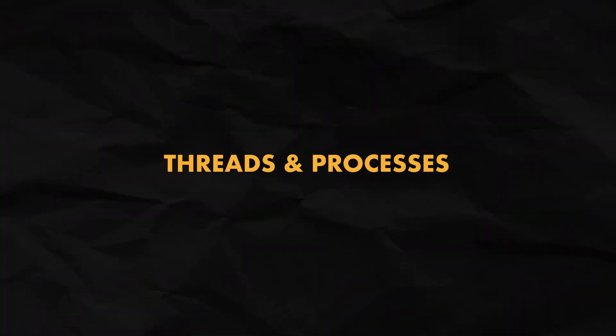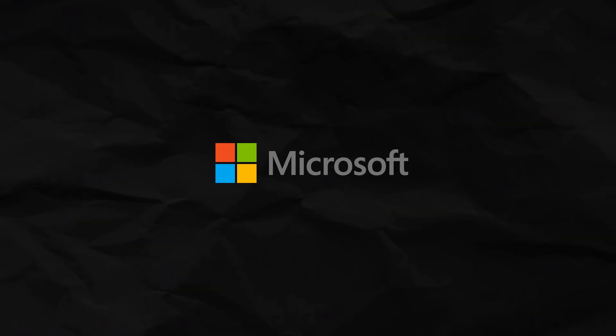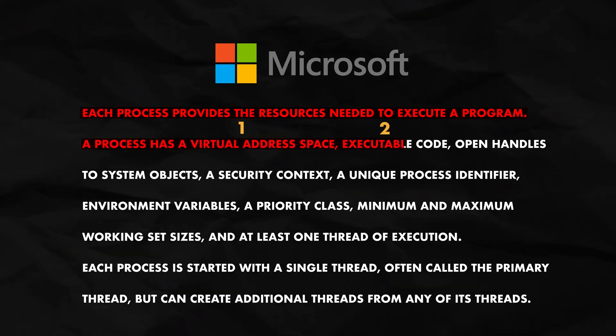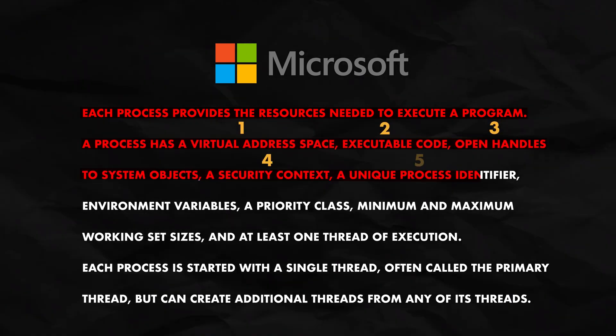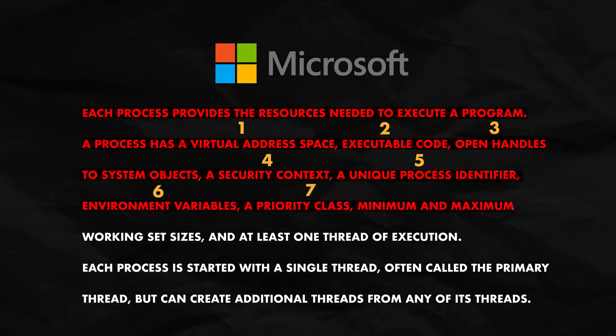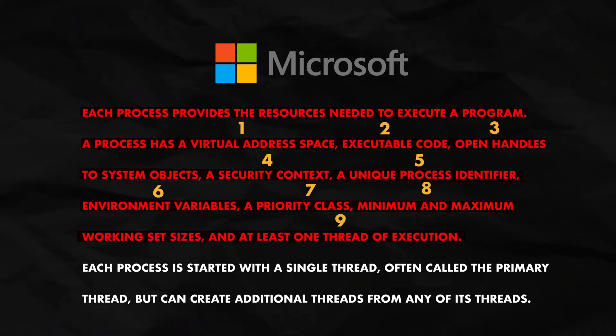There are two types of tasks that can execute concurrently, whether in parallel or not: threads and processes. According to Microsoft, each process provides the resources needed to execute a program. A process has a virtual address space, executable code, open handles to system objects, a security context, a unique process identifier, environment variables, a priority class, minimum and maximum working set sizes, and at least one thread of execution.